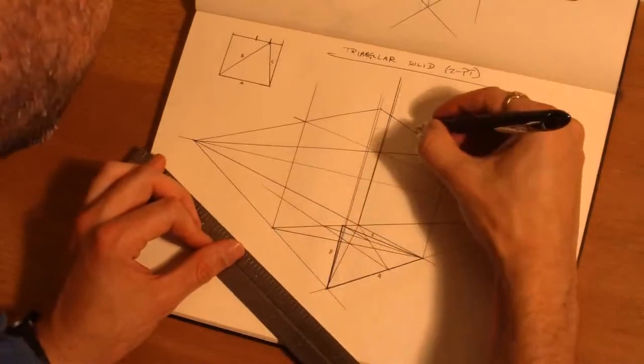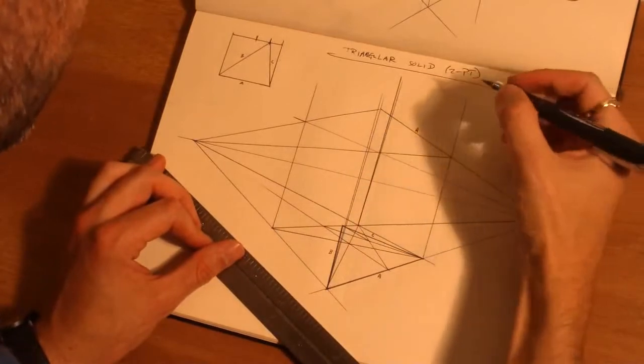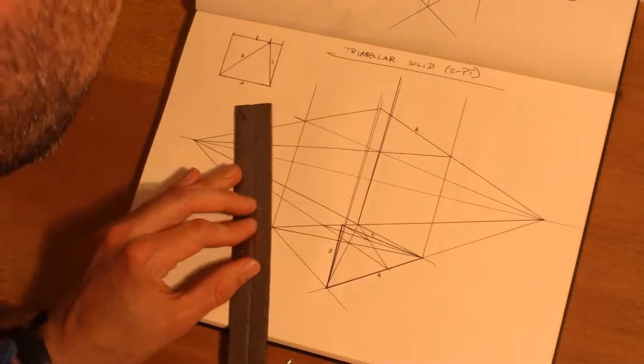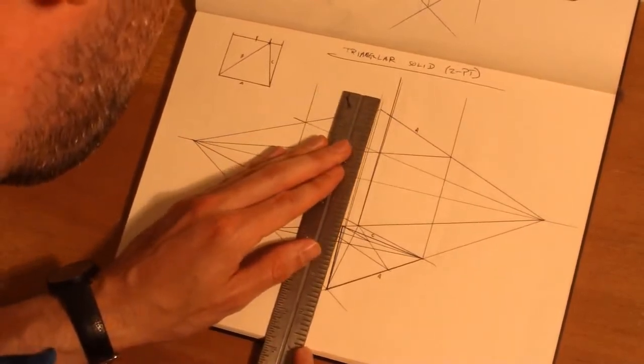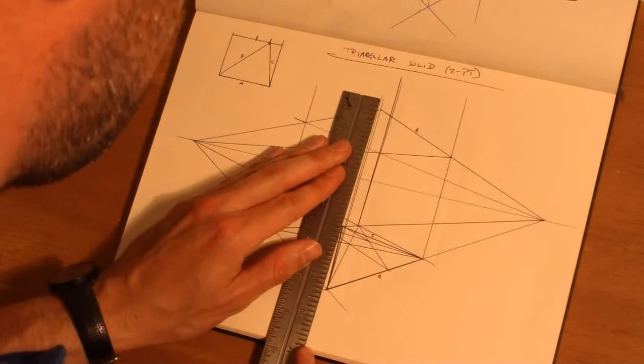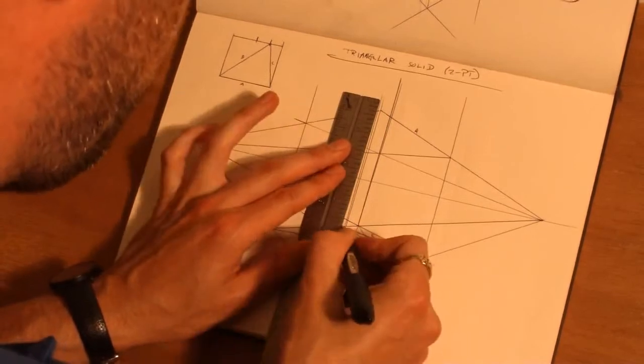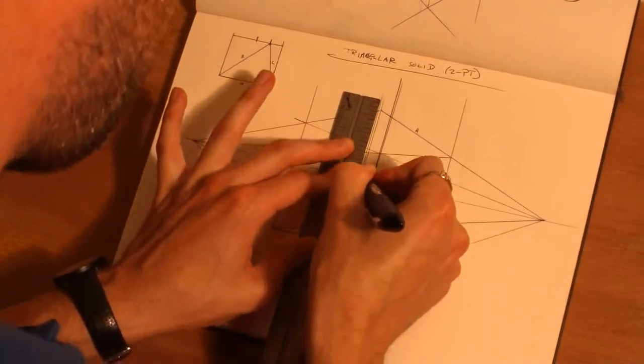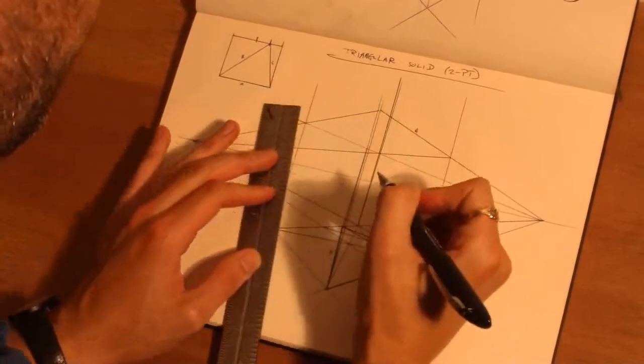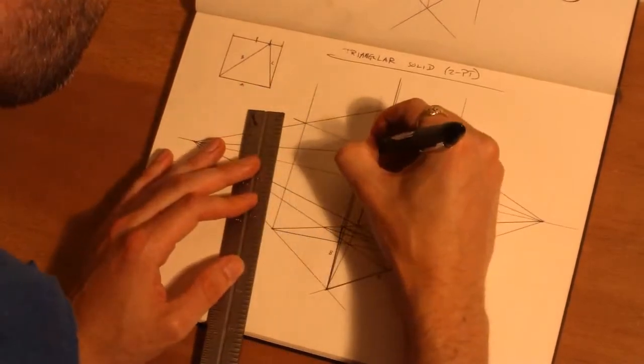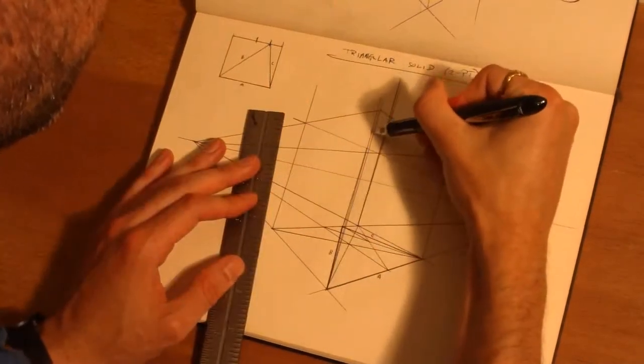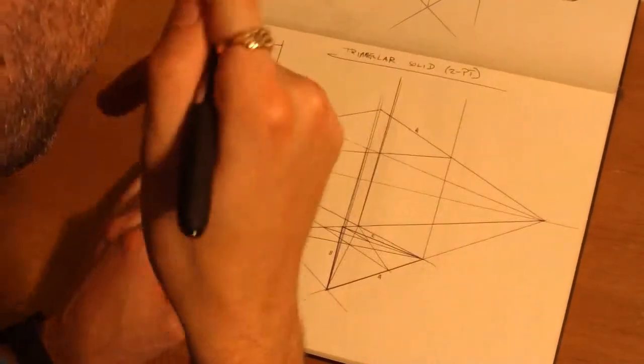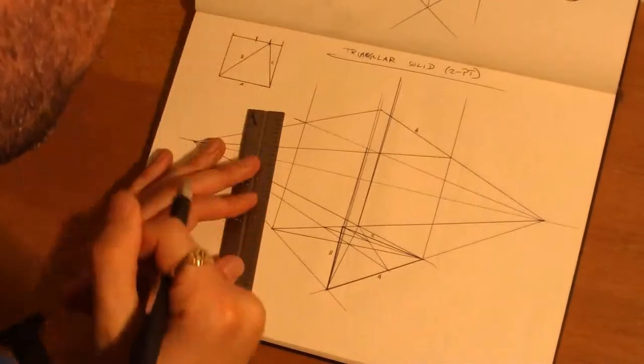So we have side A right here, but we need to find side B and side C. So all we have to do is take our point that we've already located and project that up here. You can see this is why it's really important to keep these lines, the vertical lines, parallel to each other.